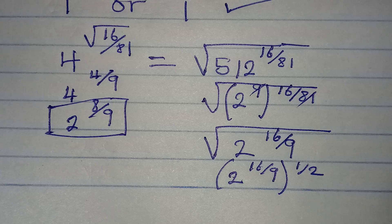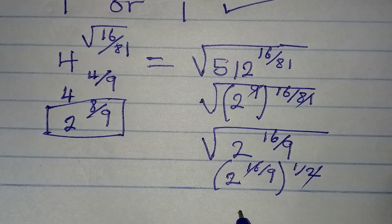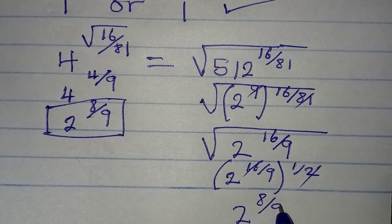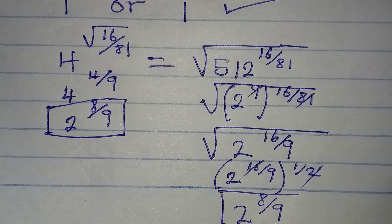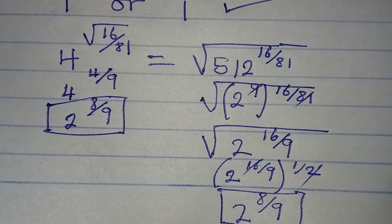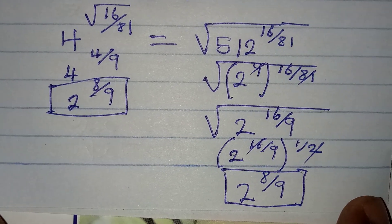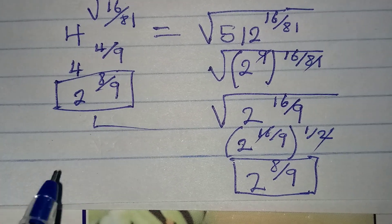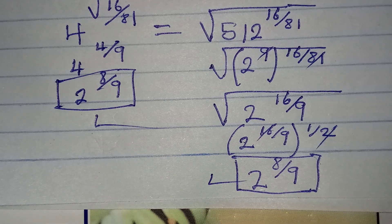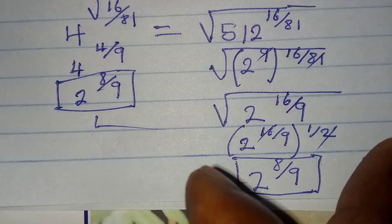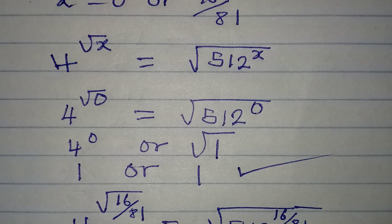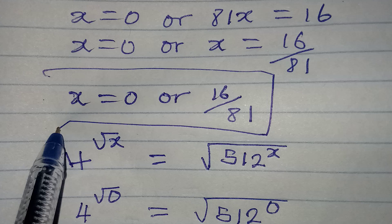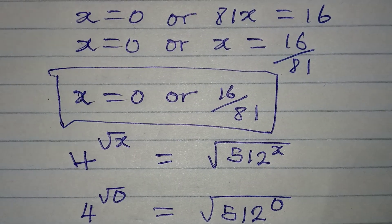Since 2 into 16 is 8, we get 2 to the power of 8 over 9. Now checking what we had on the left hand side and what we have on the right hand side — both of them are the same. This is a confirmation that both solutions x equals 0 and x equals 16 over 81 satisfy the equation. Thank you for watching.